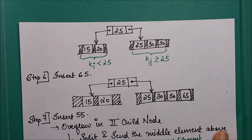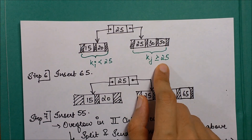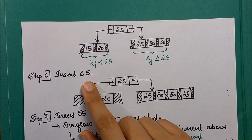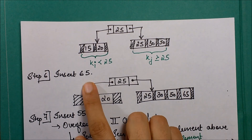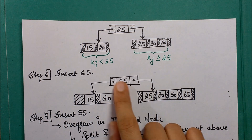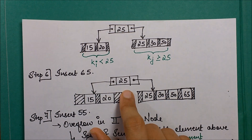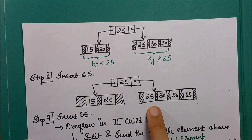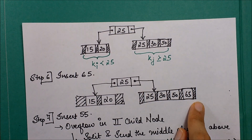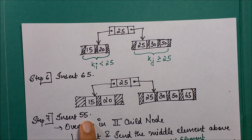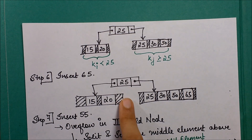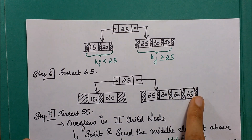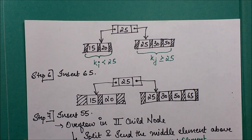Right-hand side elements are greater than or equal to 25, and left-hand side elements are less than 25. We insert 65 next — it goes to the right-hand side of 25 since 65 > 25. Then we insert 55, which also goes to the right branch, but this leads to a split because the right-hand side node was already full.